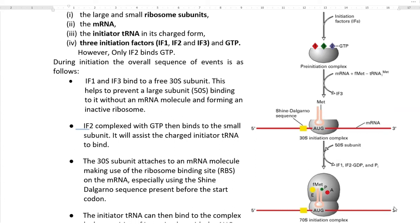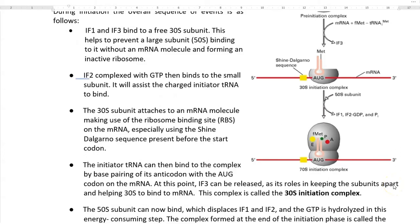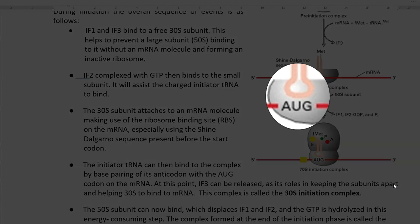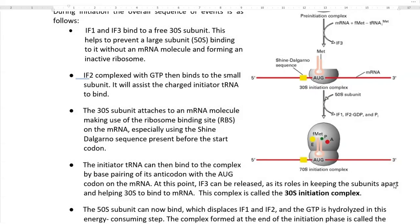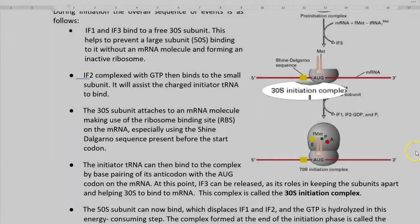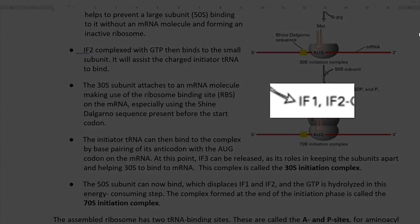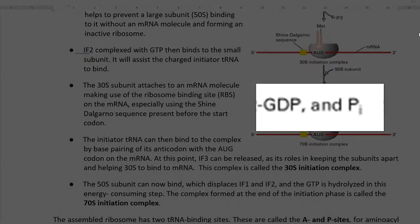This particular site in the mRNA is technically referred to as the Shine-Dalgarno sequence. The initiator tRNA then binds to the complex by base pairing of its anticodon with the AUG codon present in the mRNA. At this point, initiation factor IF3 is released, as its main role was to keep the 30S and 50S subunits apart during initiation. This complex is now called the 30S initiation complex. In the next step, the 50S subunit binds, displacing IF1 and IF2, and GTP is hydrolyzed, forming the 70S initiation complex.